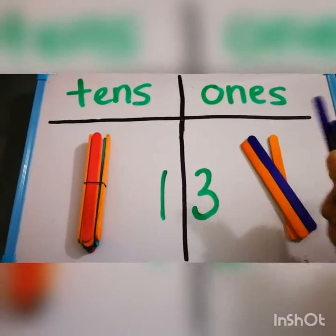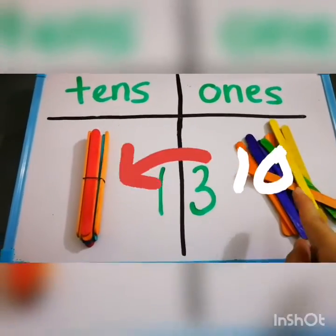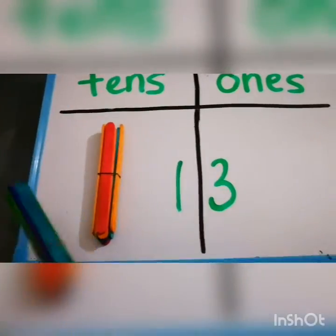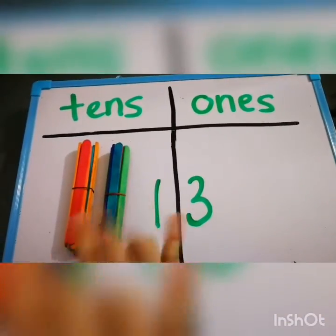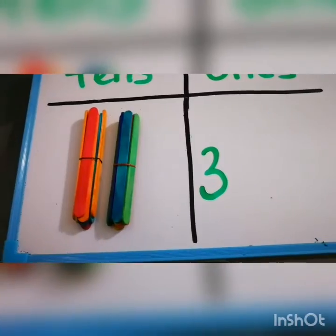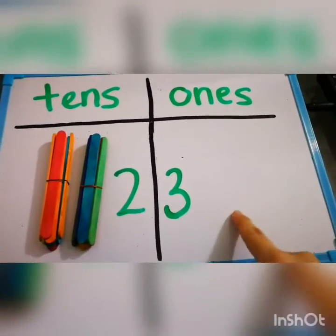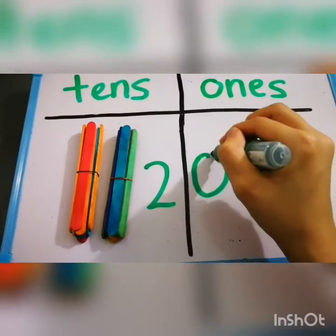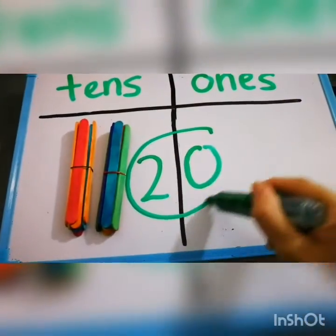I'm going to add more popsicle sticks to the 1's. There's 3, 4, 5, 6, 7, 8, 9, 10. Now once it's 10, I need to put them together and tie it in a bundle, and once it's a bundle I need to put it at the tens place value. How many bundles of popsicle sticks are there? 1, 2. So it's no longer 1, now it's 2, because there are 2 bundles of popsicle sticks. And are there any popsicle sticks on 1's? Nope, so this becomes 0. Because 2 bundles of tens makes 20.